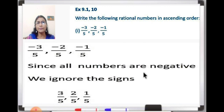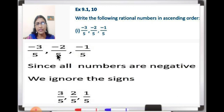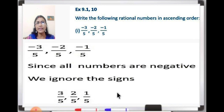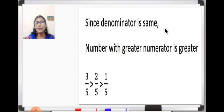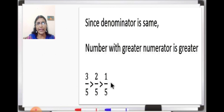Now you can see all the numbers are negative, so we will ignore the signs. Ignoring the sign, we write down the numbers: 3 upon 5, 2 upon 5 and 1 upon 5. All the denominators are same, so the number with the greater numerator is greater. That means 3 upon 5 is greater than 2 upon 5, and 2 upon 5 is greater than 1 upon 5.